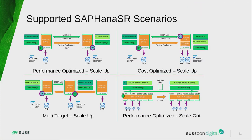Now coming to SAP HANA in system replication. We have here on this overview four scenarios: the performance optimized scale-up, the cost optimized scale-up where you have two SAP systems on the secondary side, the multi-target scale-up scenario where you have more than one replication — it could be a chain or a multi-target situation — and even a performance optimized scenario for scale-out where you have multiple workers and multiple HANA nodes working for one HANA database.